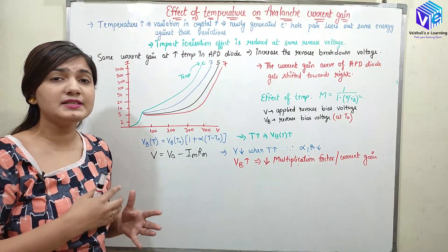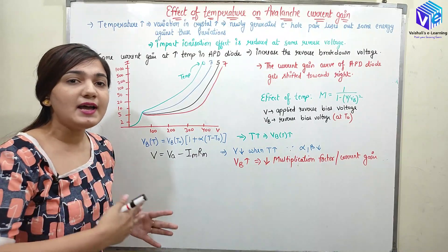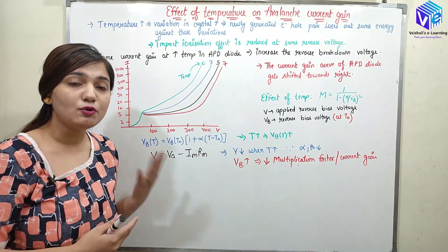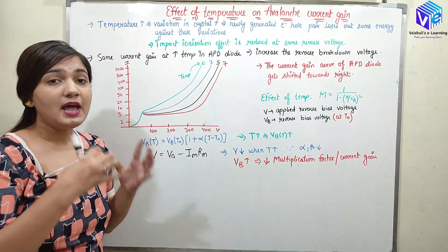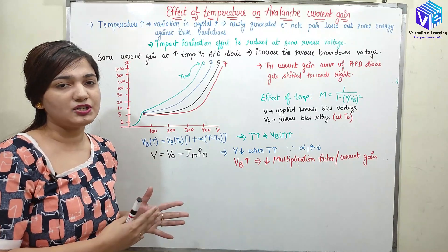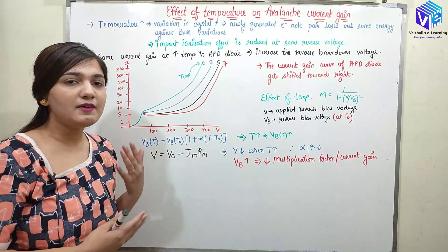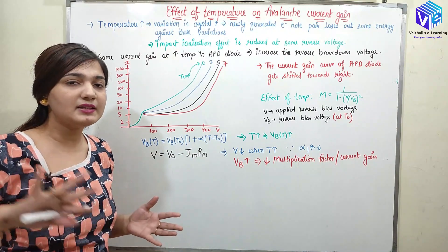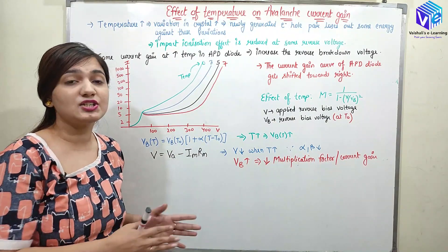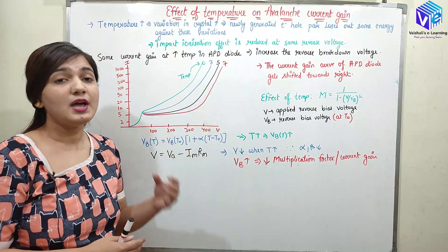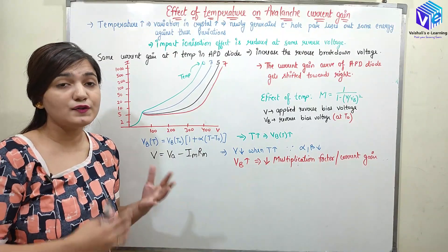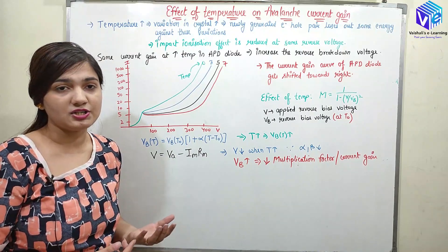What happens at increased temperature? If I increase the temperature, the vibrations will be more for the electron-hole pair and they are going to lose energy through vibrations also. Thermal vibrations are making the energy less, due to which the impact ionization phenomenon will be reduced, and the number of newly generated electrons would be less in the gain region.